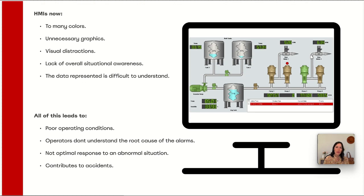So, the HMIs now. Back in the old days, the people who designed the HMIs did the best they could with the resources they had. Today we have HMIs that have too many colors and unnecessary graphics, and all of this can be visual distractions for the operators because they have to study the screen all the time trying to find out if something is right or wrong. At the end, the data represented on the screen is very difficult to understand. All of this leads to poor operating conditions because the operators will not understand what's happening in the process very quickly, and that will make it difficult for them to act when something is going wrong.